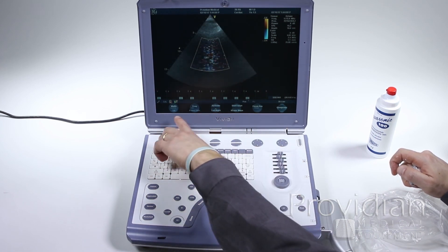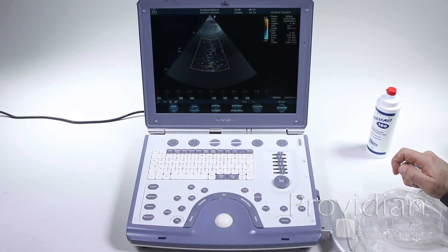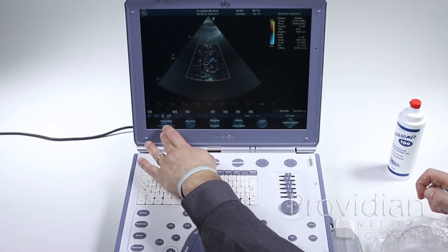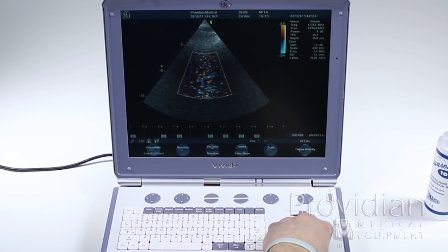So notice when I do that, these controls along the bottom also change. So now it's saying I can change that 2D image. If I click on active mode again, now I can do these things to change that color image.